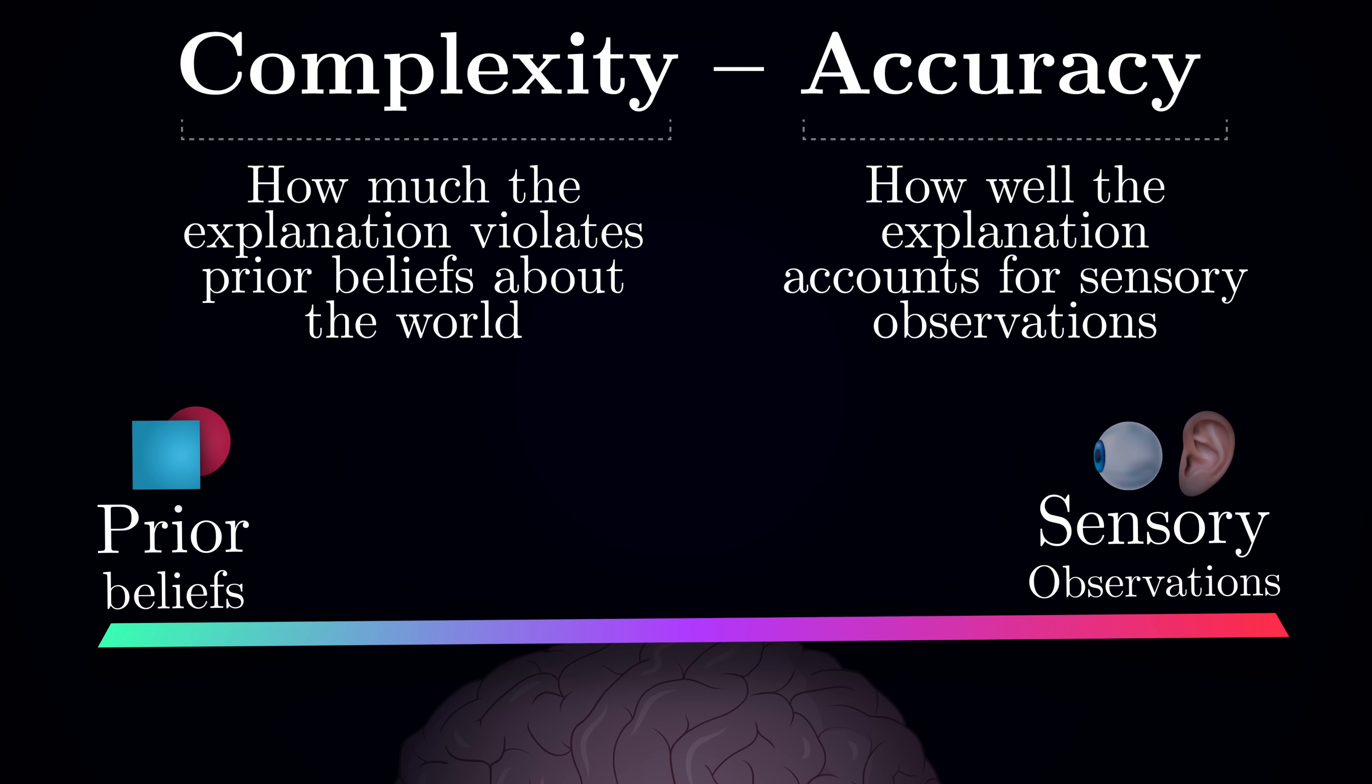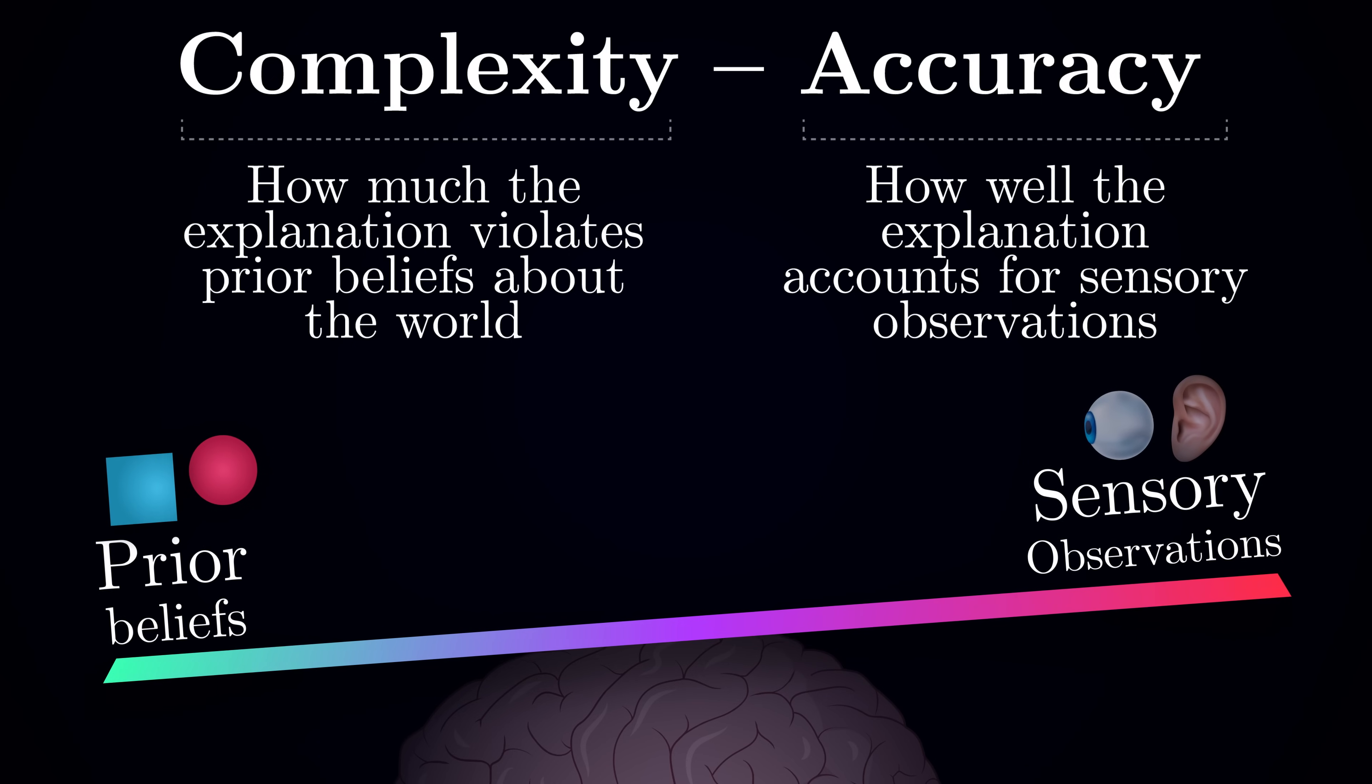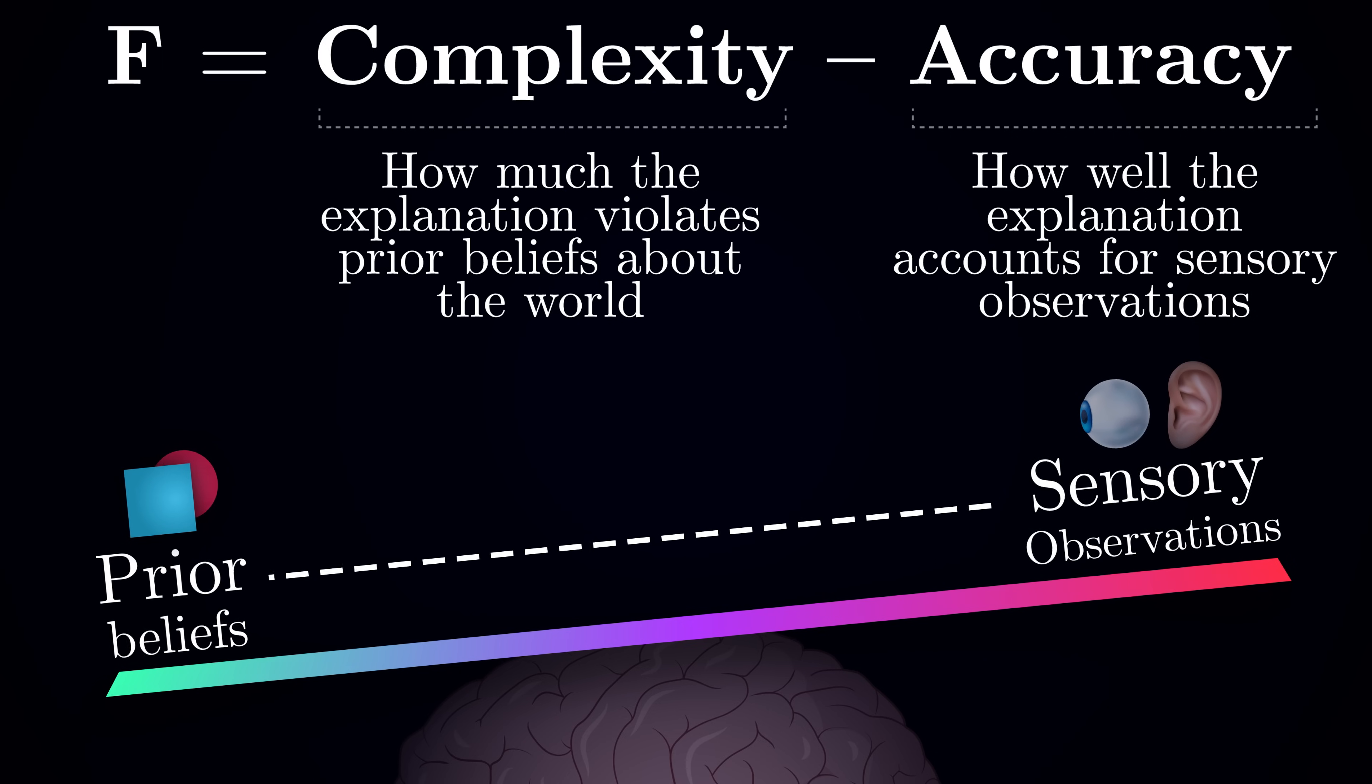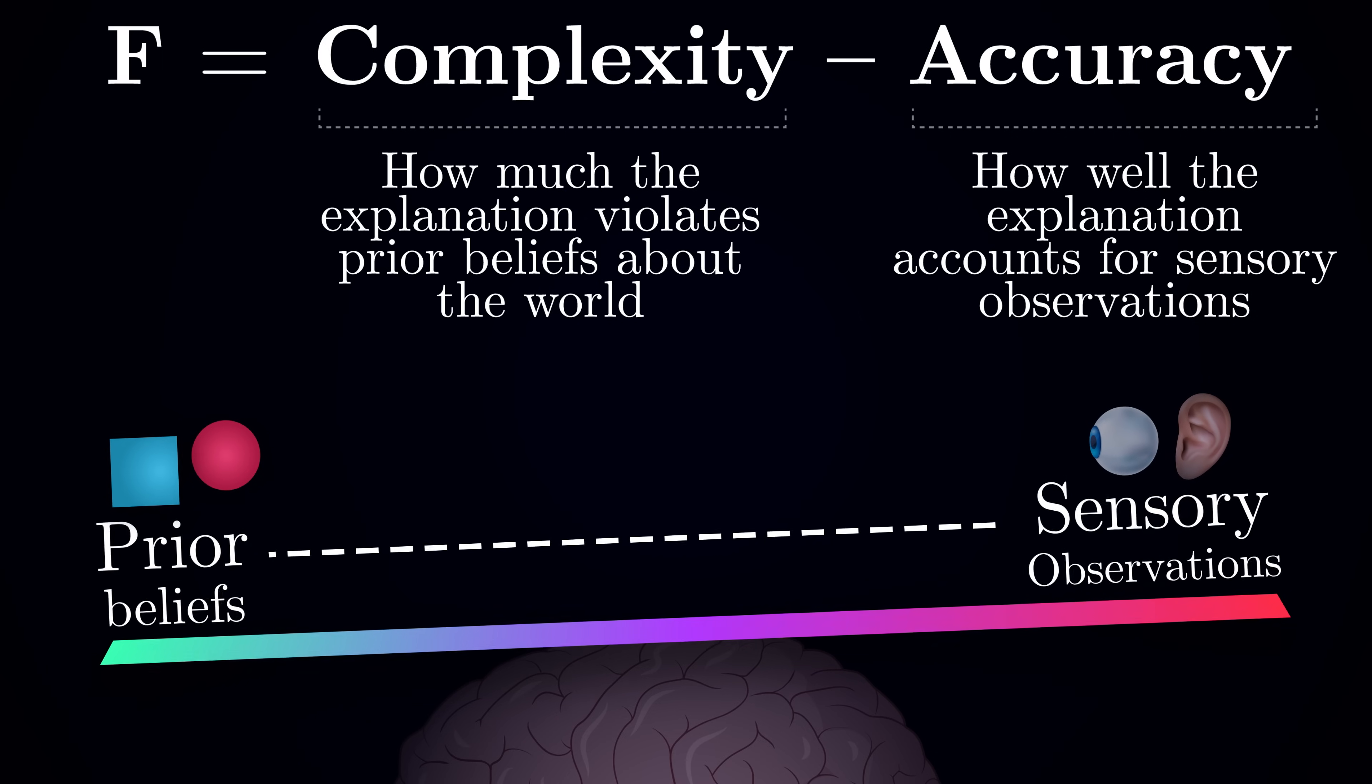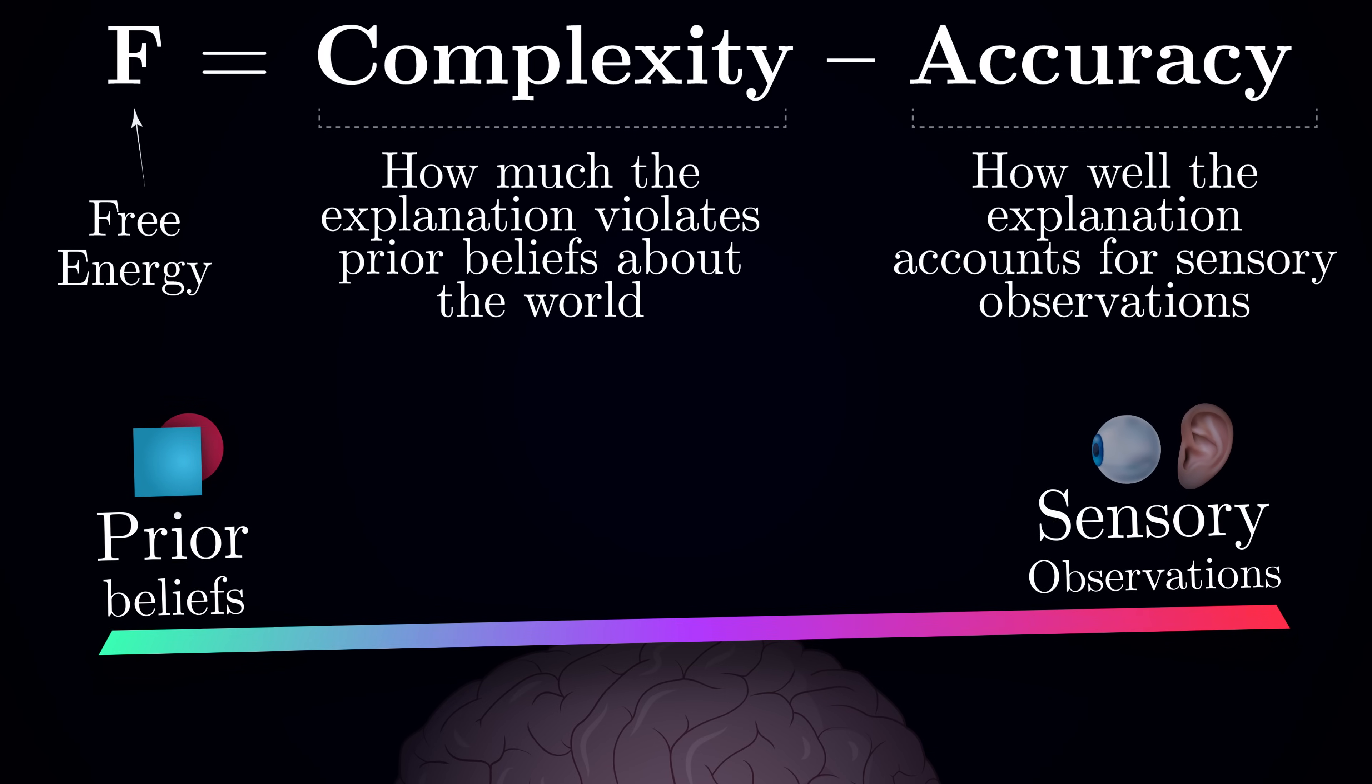Your brain is constantly trying to find the perfect balance between those two forces. When they are out of balance, we can think of it as creating a kind of tension or energy in the brain which it wants to minimize. This tension is what neuroscientists call the variational free energy, or just free energy for short.